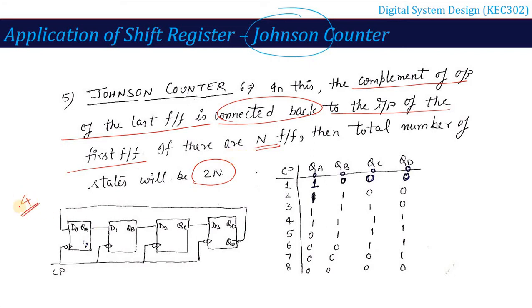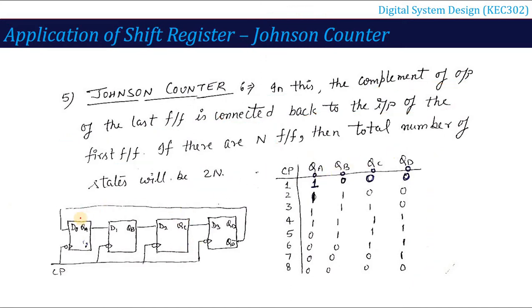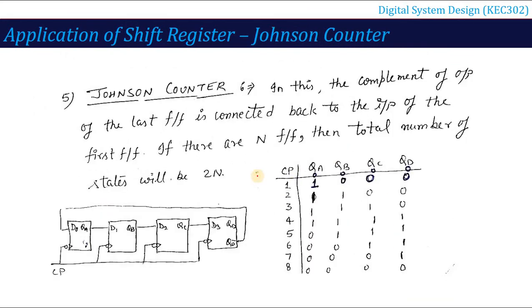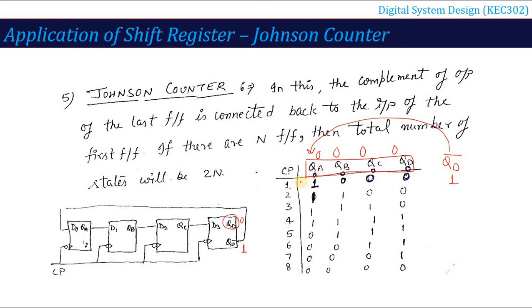For a Johnson counter with 4 flip-flops, the state repeats after 8 clock pulses. Unlike the ring counter, the initial state can be 0,0,0,0. On the first clock pulse, QD=0 so QD-bar=1, and this 1 transfers to QA. The remaining values right-shift. On subsequent pulses, as long as QD=0, QD-bar=1 keeps transferring 1 to QA, filling the register with 1s over 4 pulses.